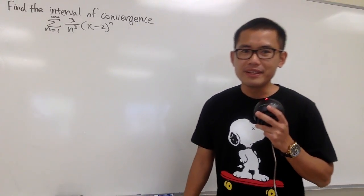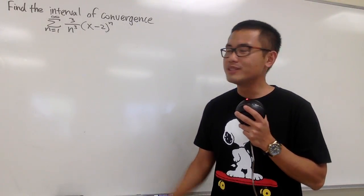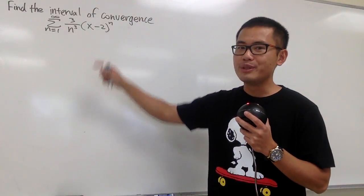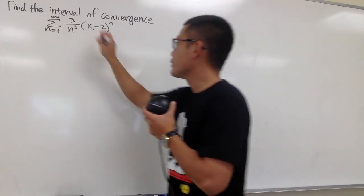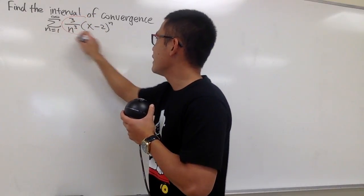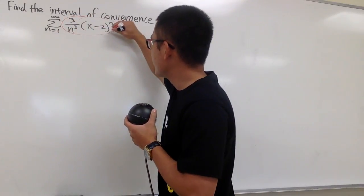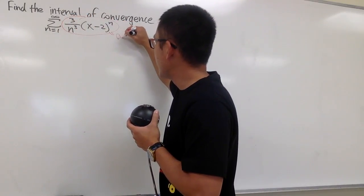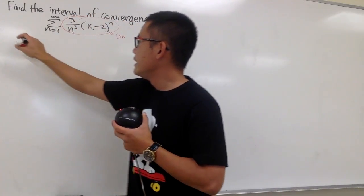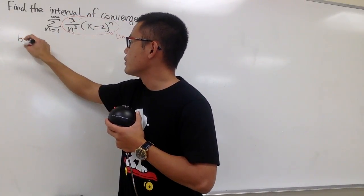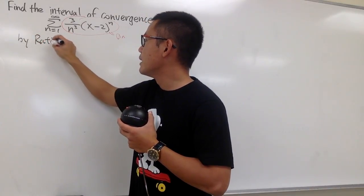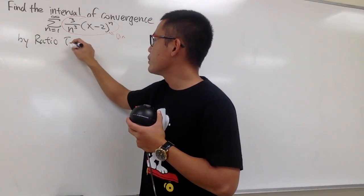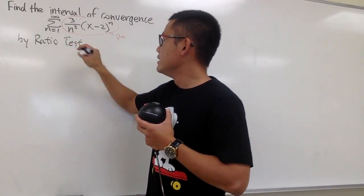I'm going to show you guys how to find the interval of convergence for this power series by using the ratio test. So let's go ahead and indicate that this right here is our a_n, and we'll be using the ratio test. So let's write that down: by the ratio test.